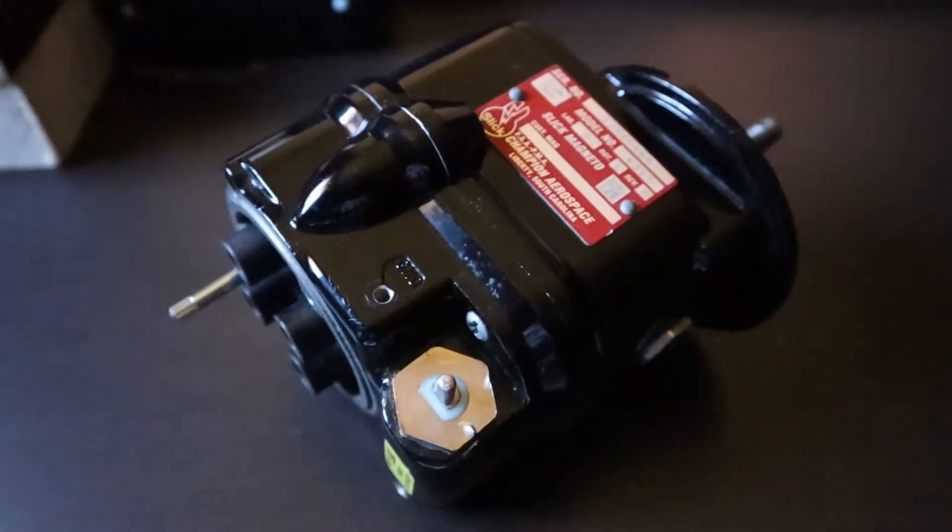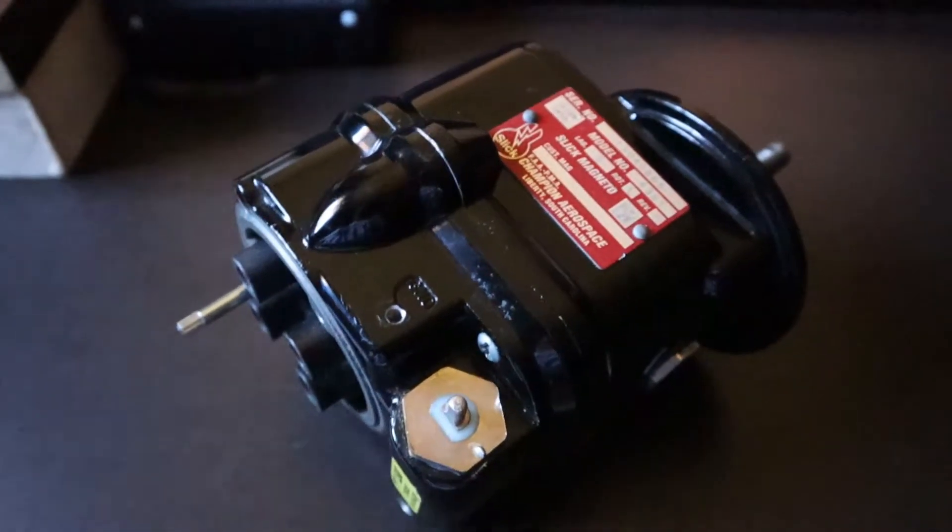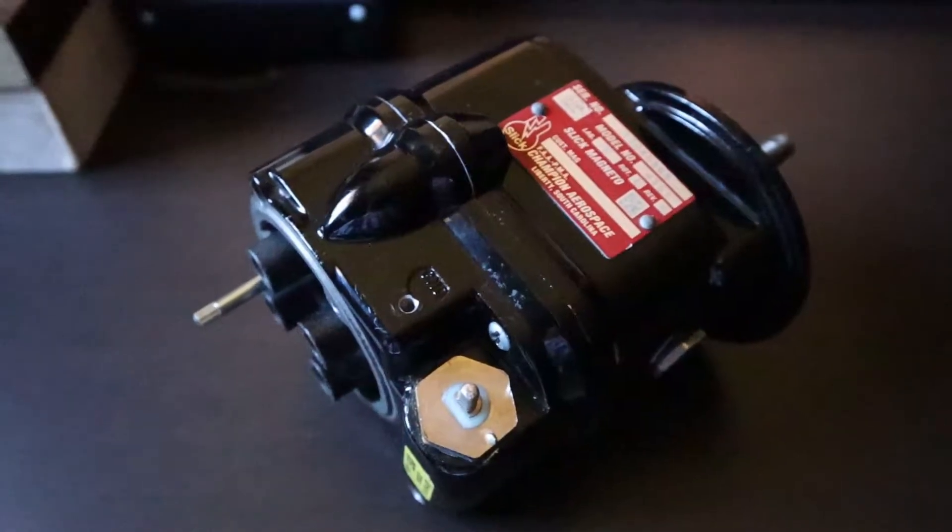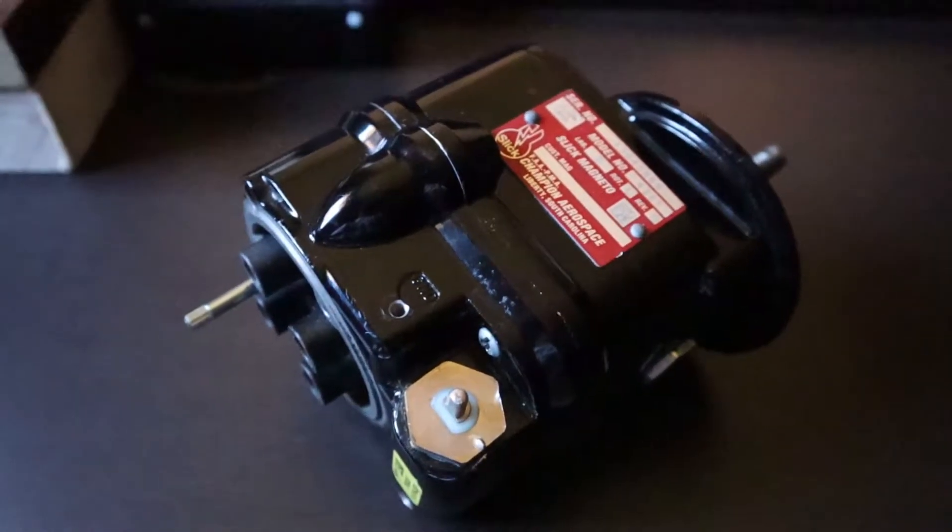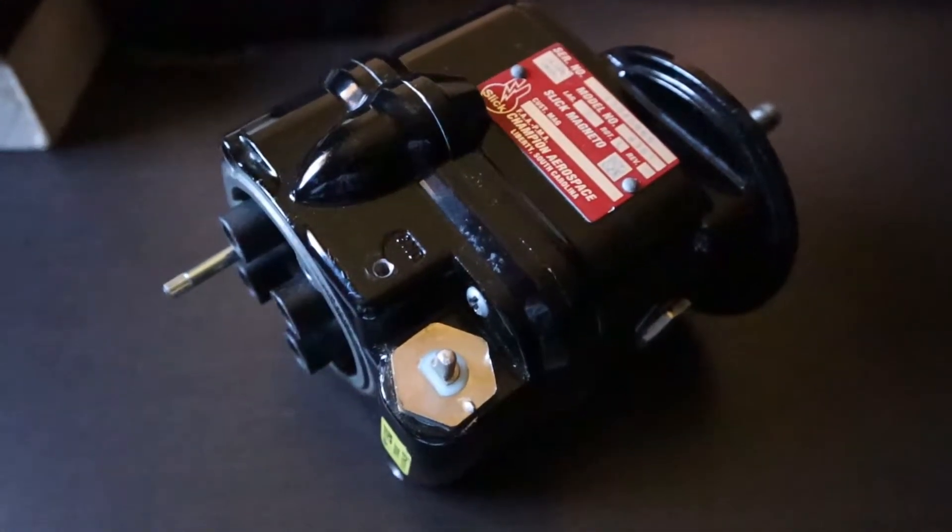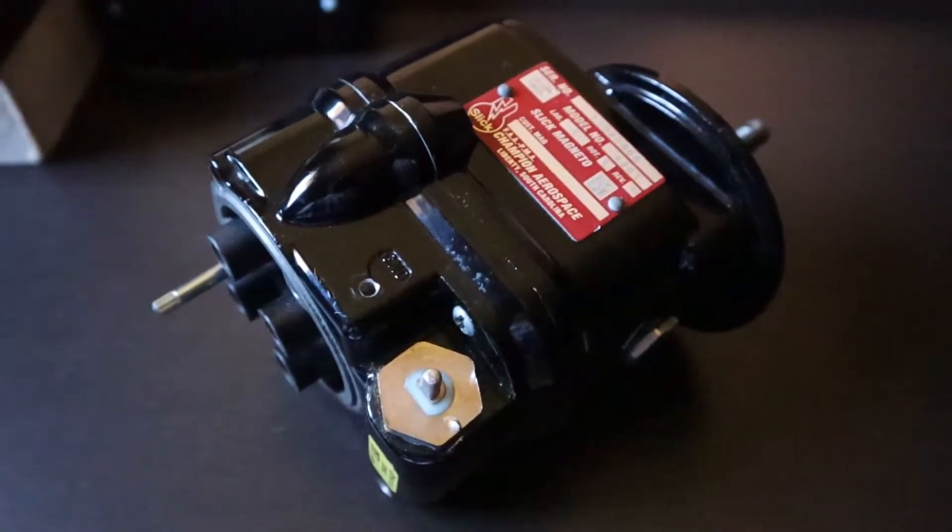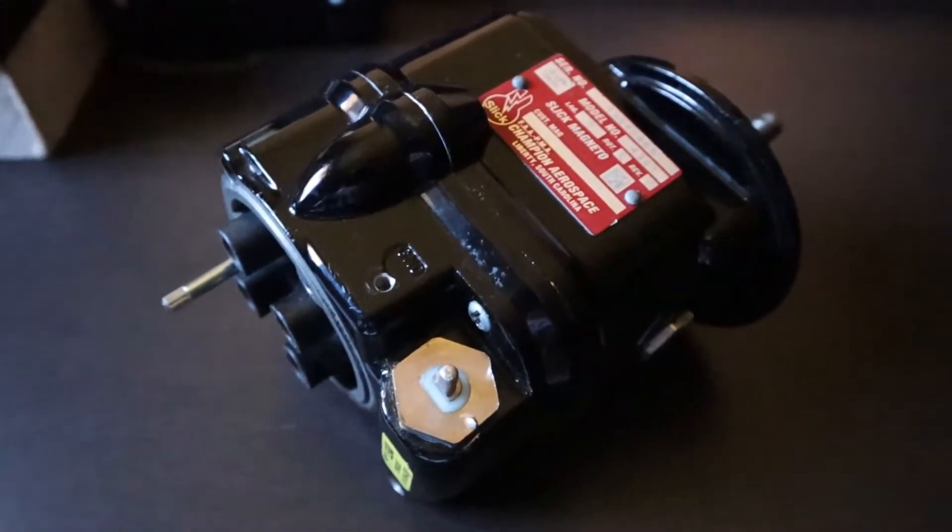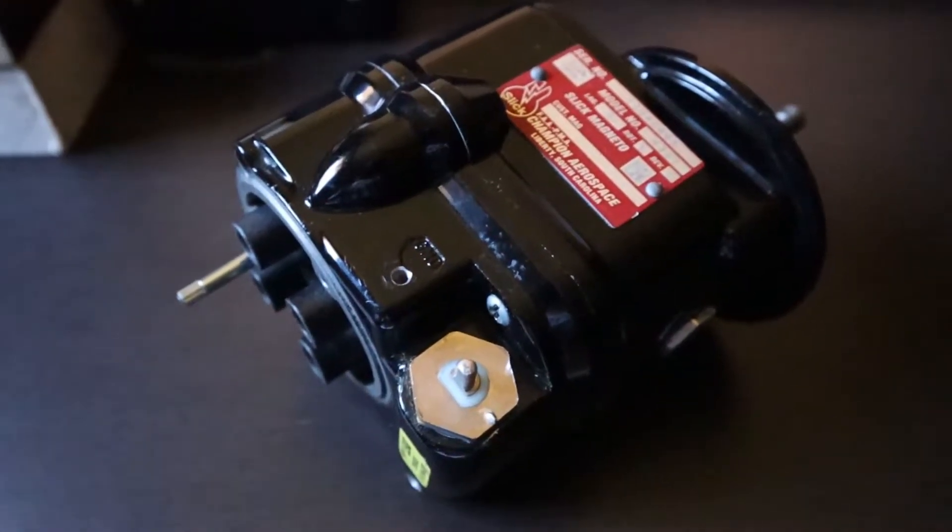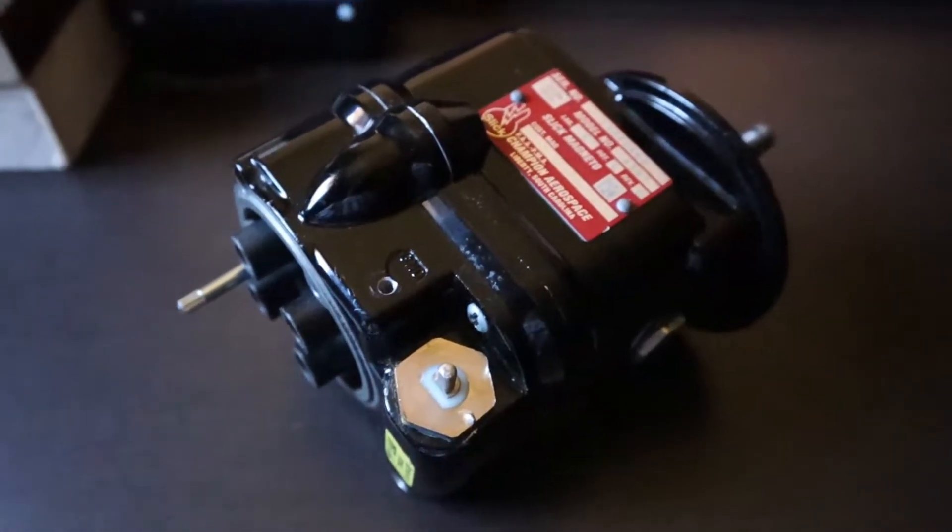All righty, so this is going to be a different kind of video for the channel here. You may be wondering what the heck is this - this is what you call a magneto, and they are commonly used in small aircraft that use reciprocating engines, either radial or horizontally opposed.